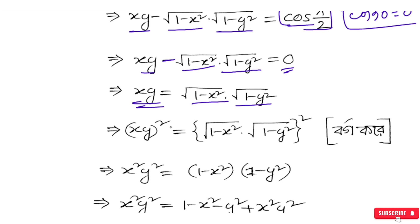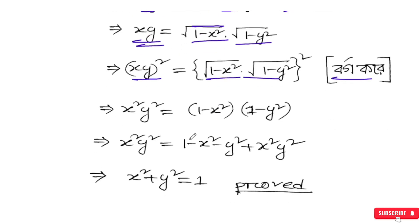Now squaring both sides, we get x²y² is equal to (1−x²)(1−y²). This denotes the multiplication. Let me expand the right-hand side with the bracket.